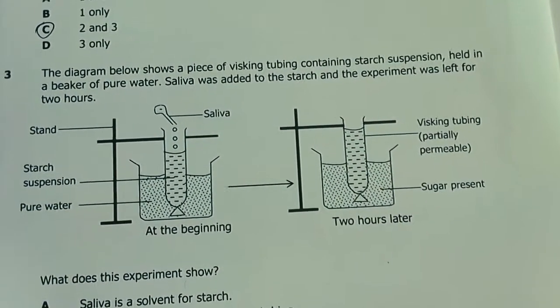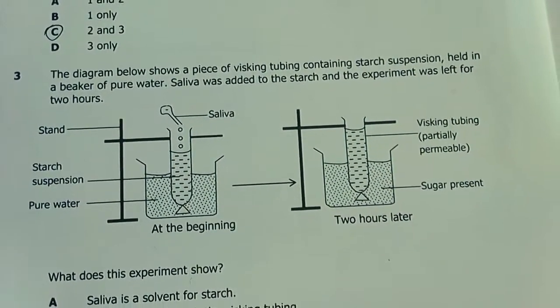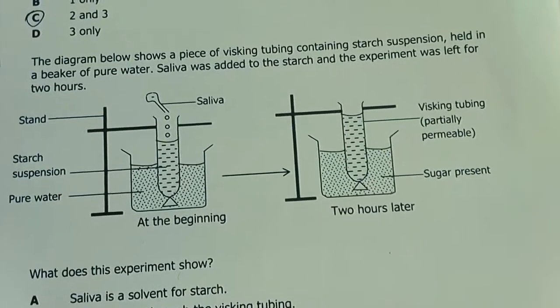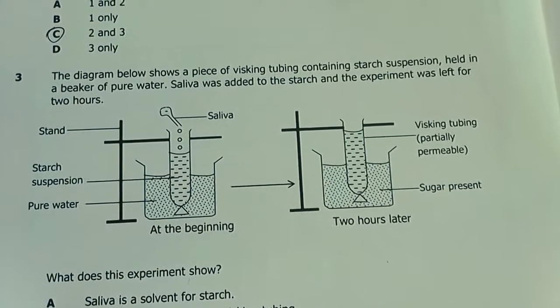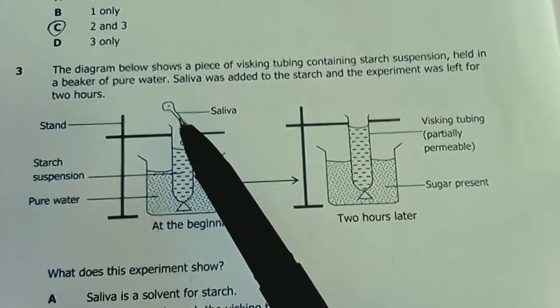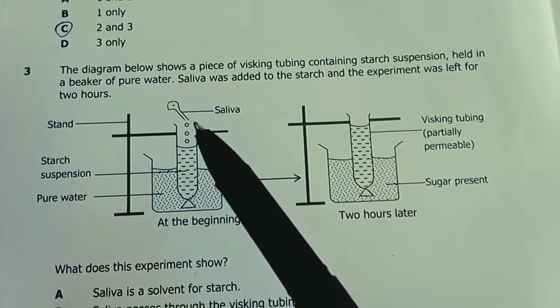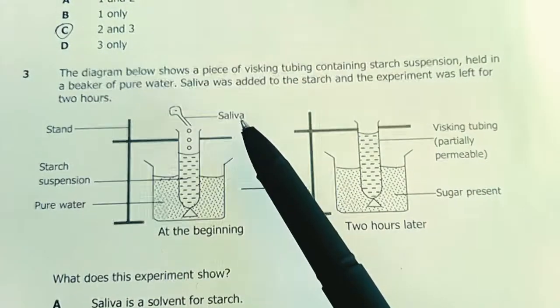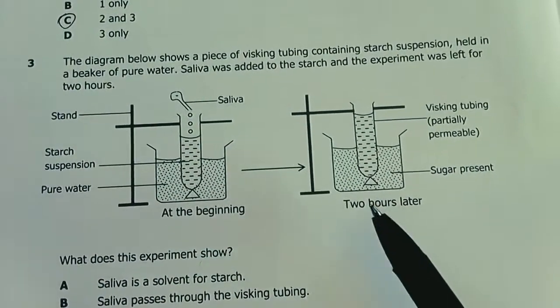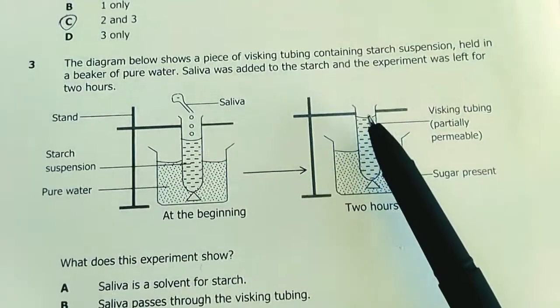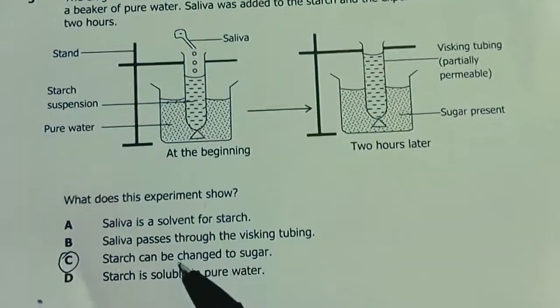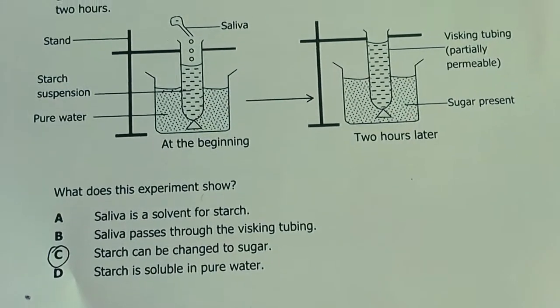Question 3. The diagram shows a piece of visking tubing containing starch suspension held in a beaker of pure water. Saliva is added to the starch and the experiment was left for 2 hours. Saliva has got amylase in it. Look at the level of the solution here and compare it to the before. The question follows: what does this experiment show?